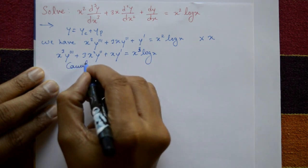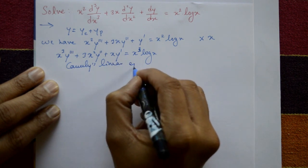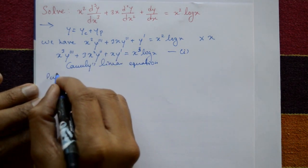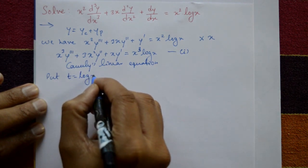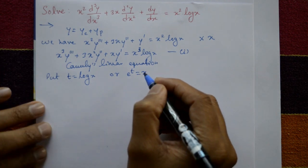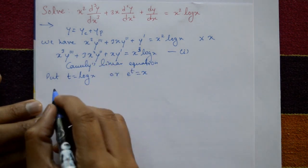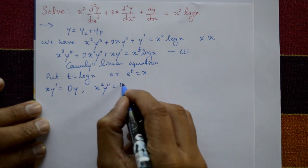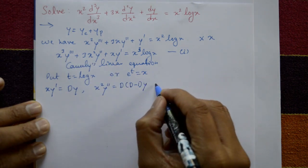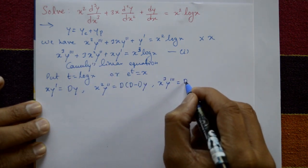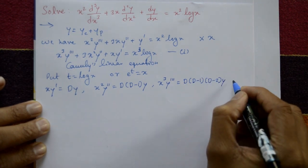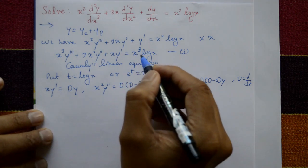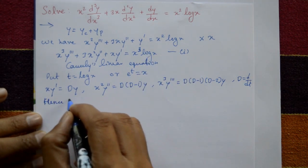Now this is a standard Cauchy's linear equation. For Cauchy's linear equation, put t = log x, or equivalently e^t = x. We assume the standard results: xy' = Dy, x²y'' = D(D-1)y, x³y''' = D(D-1)(D-2)y, where D stands for d/dt. Use these results in equation number one.